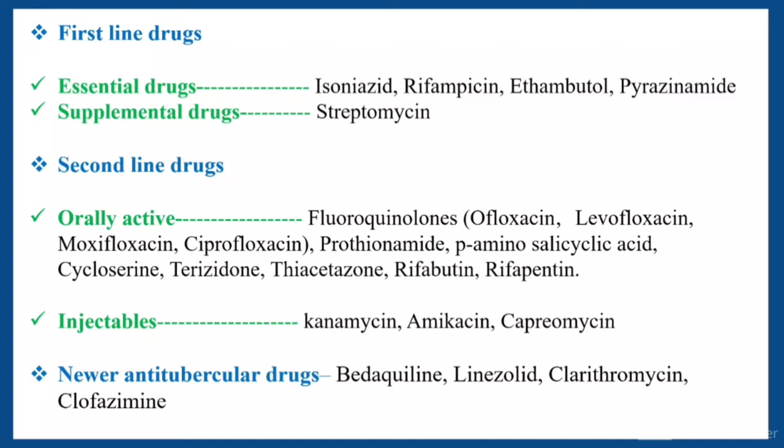Under orally active second line drugs, examples are fluoroquinolones, prothionamide, para-amino salicylic acid, cycloserine, terizidone, thiacetazone, rifabutin, and rifapentine. Examples of fluoroquinolones are ofloxacin, levofloxacin, moxifloxacin, and ciprofloxacin. Under injectables, examples are kanamycin, amikacin, and capreomycin.